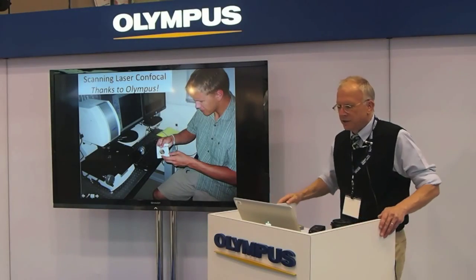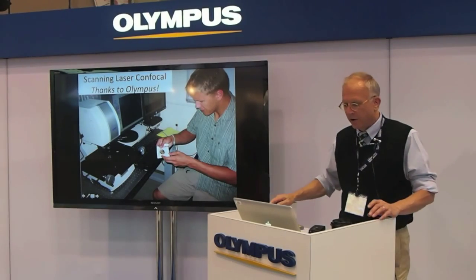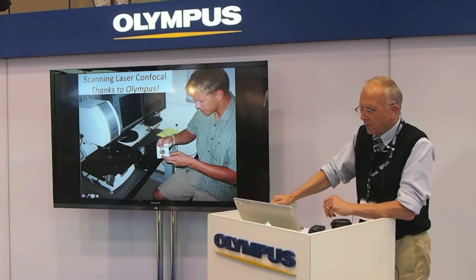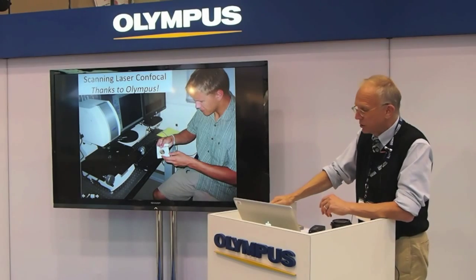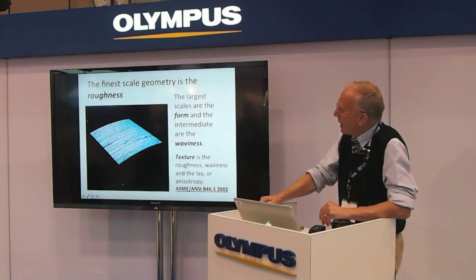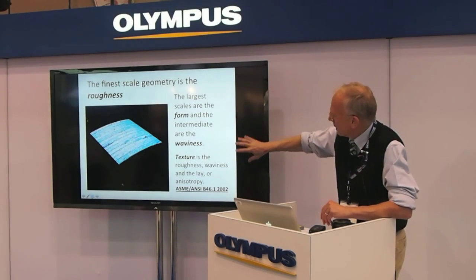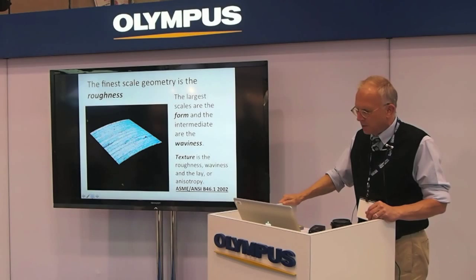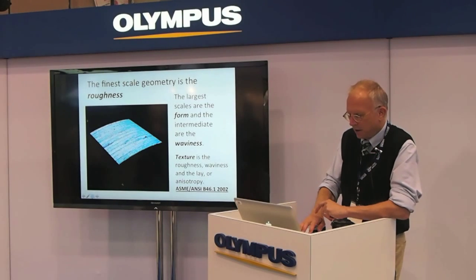We're very fortunate to have this partnership with Olympus. Here's the first Olympus we had — that's an older version, this is a newer one. One of the neat things is that you can teach an undergraduate to make useful measurements — even used in research — literally in 20 minutes. The finest scales of the geometry are what we call roughness, the largest scales are form, and intermediate is waviness. This committee, ASME ANSI B46, is a committee that I chair.